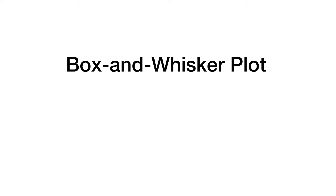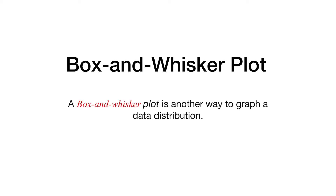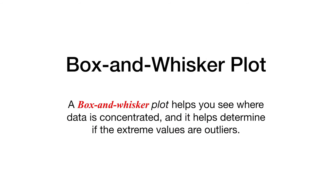Box and whisker plot. A box and whisker plot is another way to graph a data distribution. It helps you see where data is concentrated, and it helps determine if the extreme values are outliers. Let's take some examples.